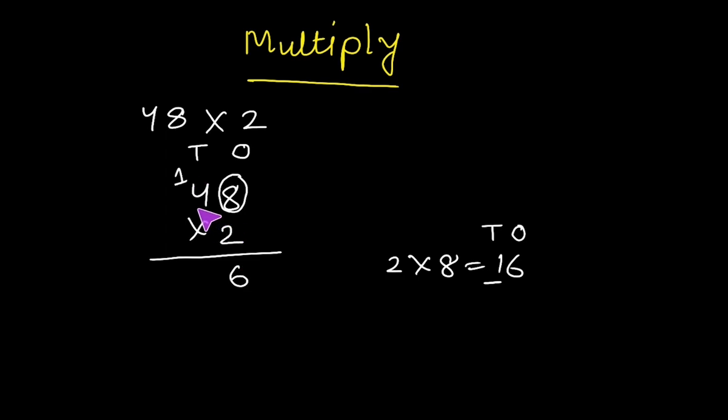Now, 4 tens is multiplied by 2. 2 times 4 is 8. We add 8 tens and 1 ten. 8 tens and 1 ten make 9 tens. We write 9 in the tens place. The answer is 96.